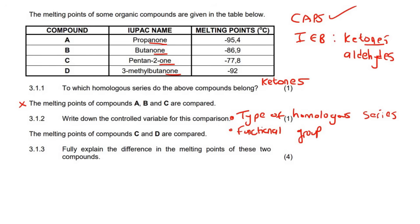So the melting points of compounds C and D are now compared. Fully explain the difference in the melting points of these two compounds. I would always like to draw it out. Pentan- means five carbons - one, two, three, four, five. On carbon two there is the ketone part, which is just a double bond oxygen. Then I just put hydrogens everywhere else. And then this one is BUT-, so that's a four-carbon chain.